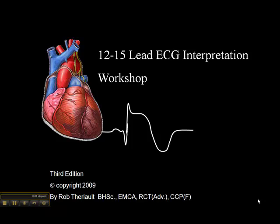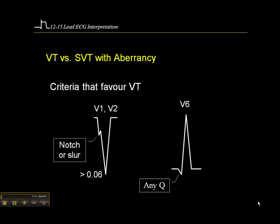Page 36 is a description of ventricular tachycardia versus supraventricular tachycardia with aberrancy. This is where the 12-lead can be helpful in making that distinction if you're uncertain.